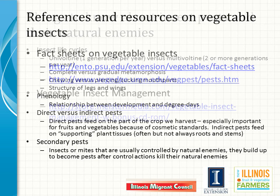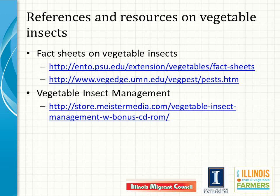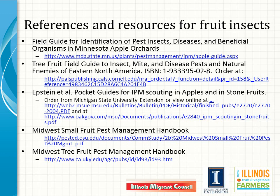For identification of pest insects in specific crops, fact sheets and specialized publications are useful. The Penn State University and University of Minnesota fact sheets cited in this slide are very useful, as is the Vegetable Insect Management book published by Meister Press. For fruit insects, references from the University of Minnesota and pocket guides for apples and stone fruits focus on how to look for and assess densities of pest problems common in tree fruits. The Midwest pest management handbooks for small fruits and tree fruits were recommended earlier in conjunction with plant disease management as well.